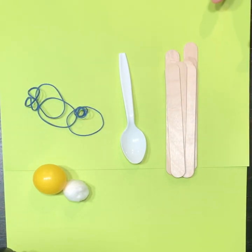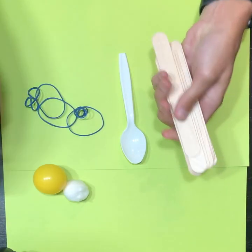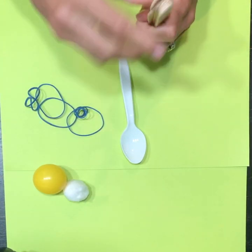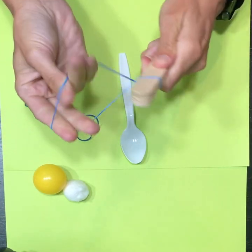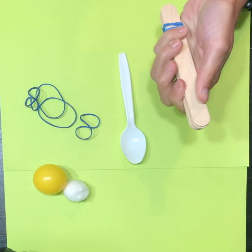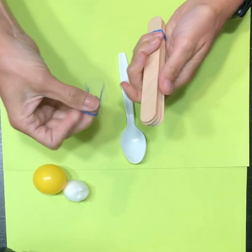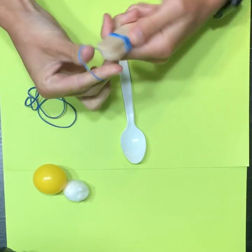So the first thing that you're going to do is you're going to take seven of your popsicle sticks. You can count those out and you're going to use two rubber bands and one at each end to secure your popsicle sticks together. So I'm going to put one here and I'm going to put another one here like that.